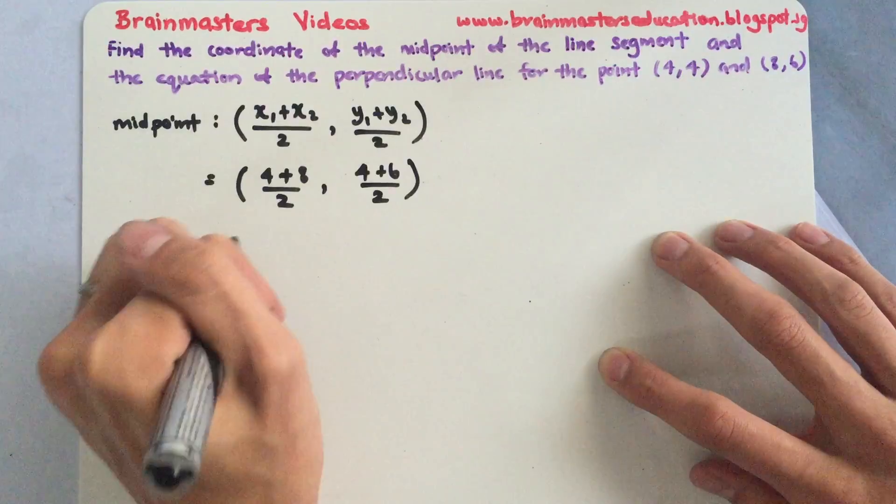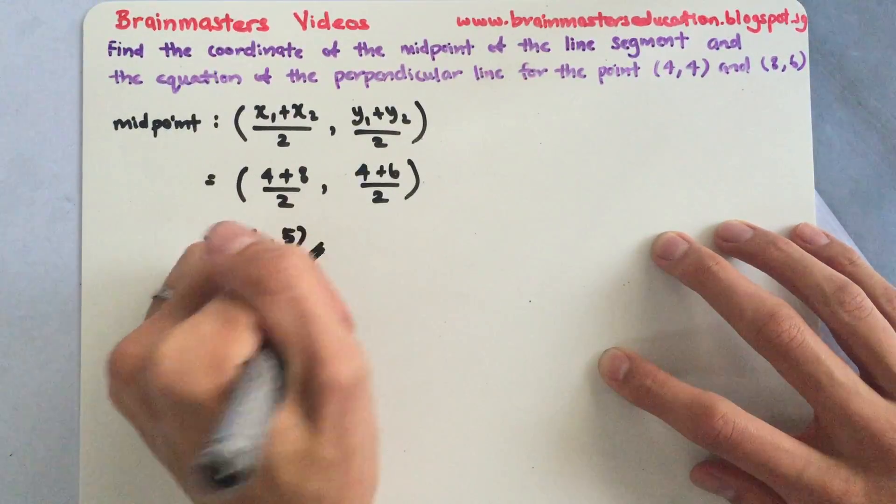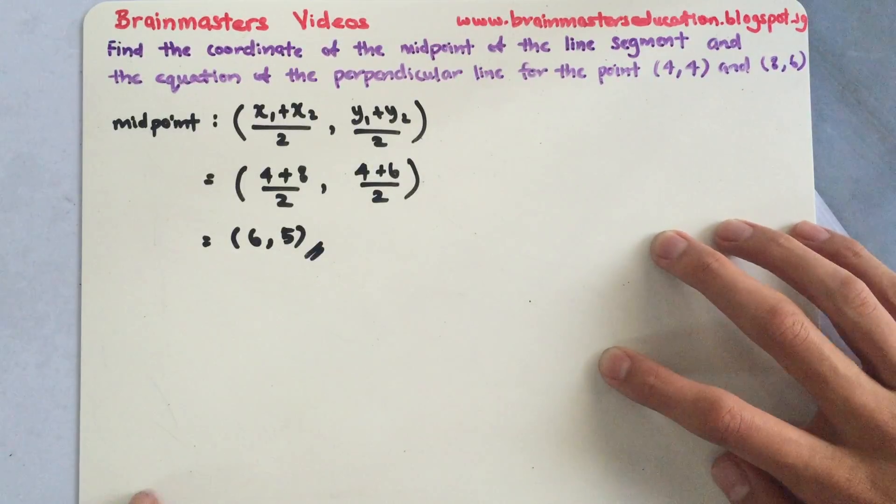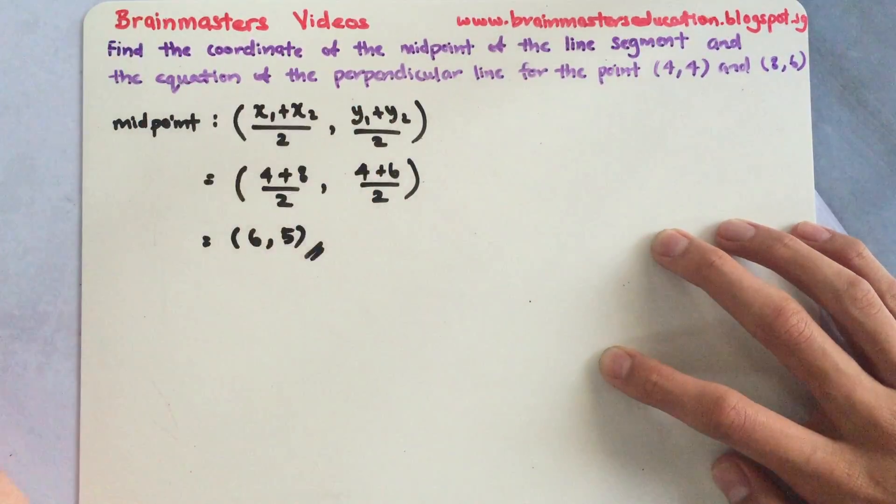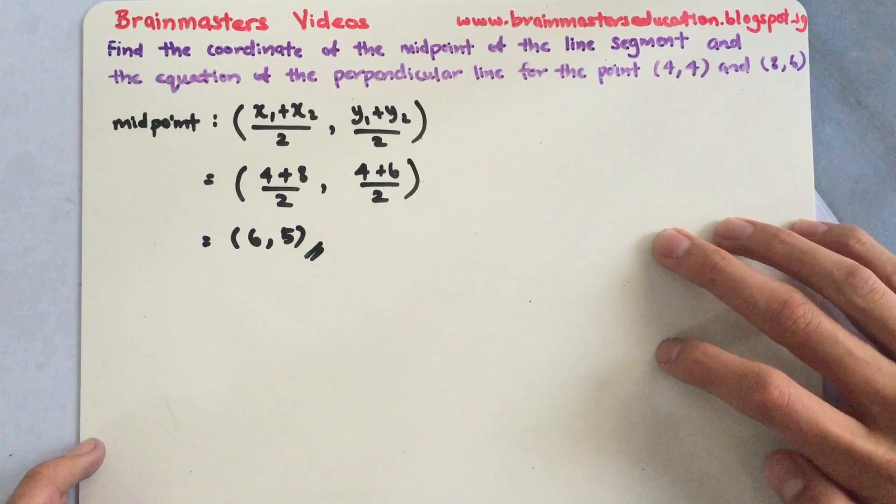So working on this way, I will have (6,5) for my midpoint. So next they're also asking for the equation of the perpendicular line. Perpendicular lines, what does it mean?